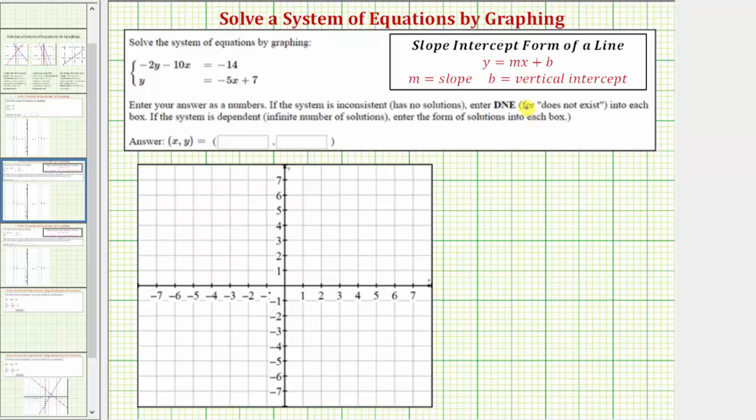We want to begin by graphing both equations on the same coordinate plane. Let's first work on graphing the equation negative 2y minus 10x equals negative 14. There are several ways we can graph this equation. We can make a table of values, determine the intercepts, or write it in slope-intercept form, which is the form y equals mx plus b, where m is the slope and b is the vertical intercept. Let's go ahead and write this in the slope-intercept form by solving for y.